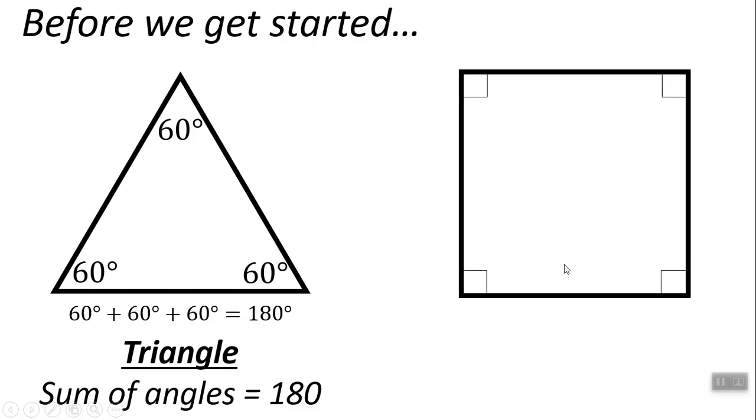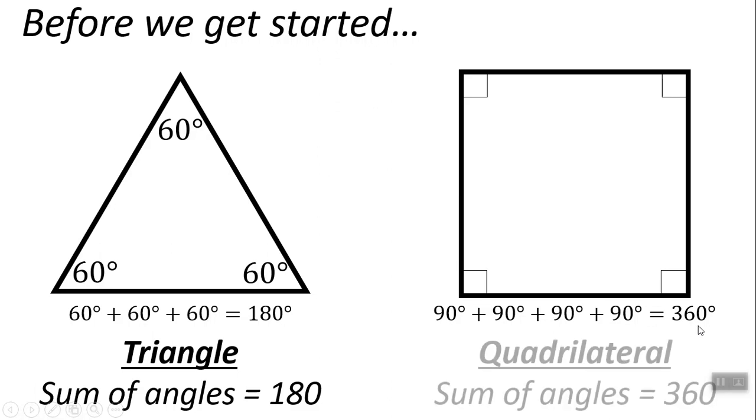We know that for quadrilaterals, quadrilaterals' angles are always going to add up to 360 degrees. So the sum of angles for quadrilaterals is 360.